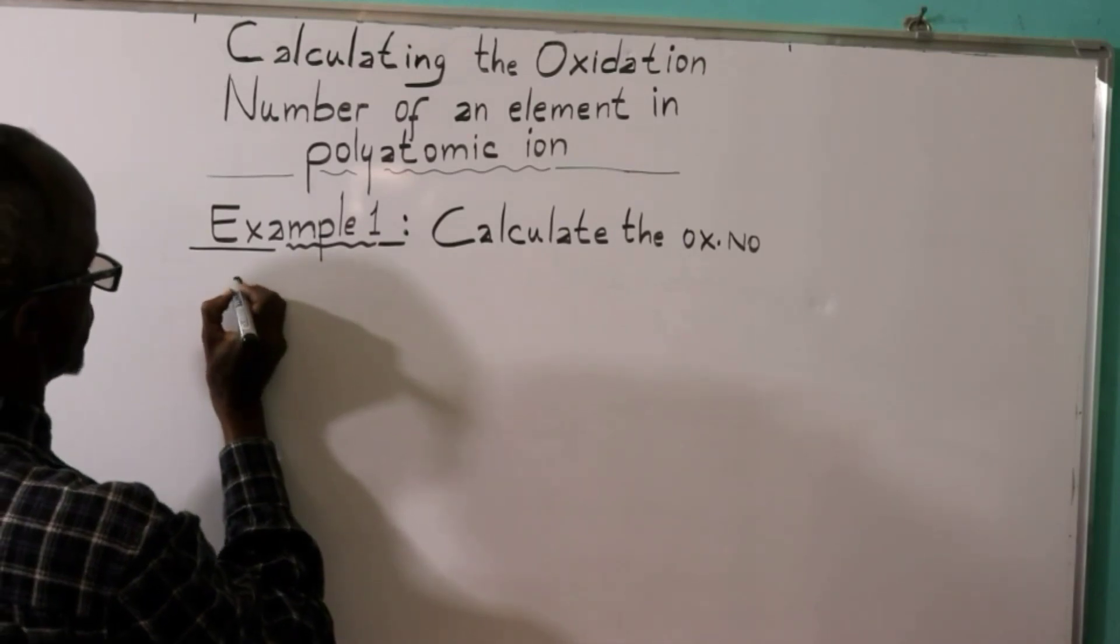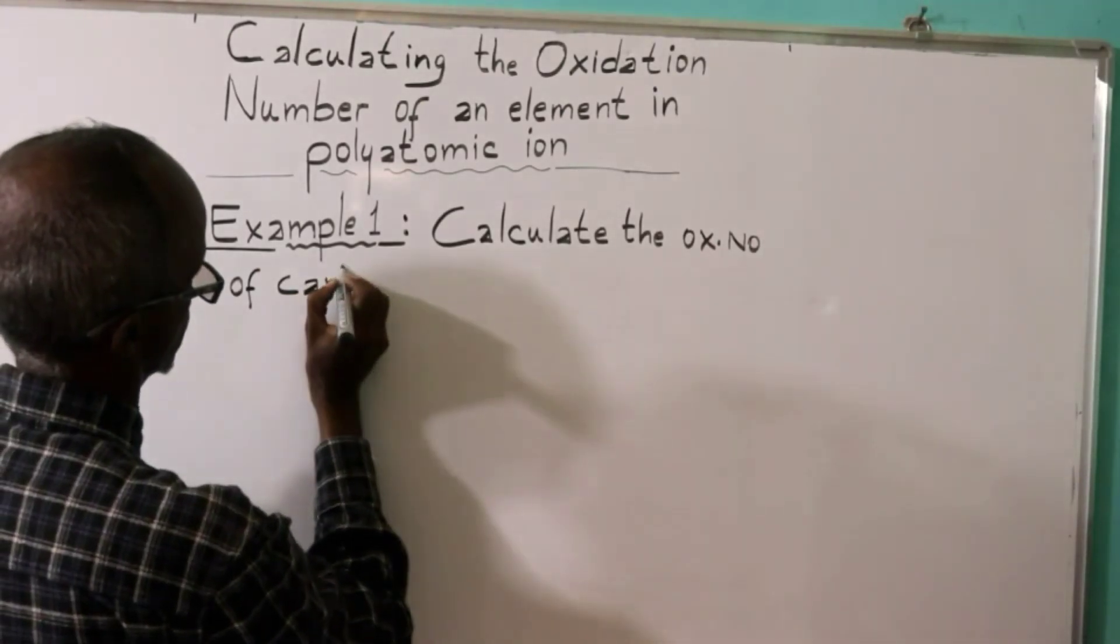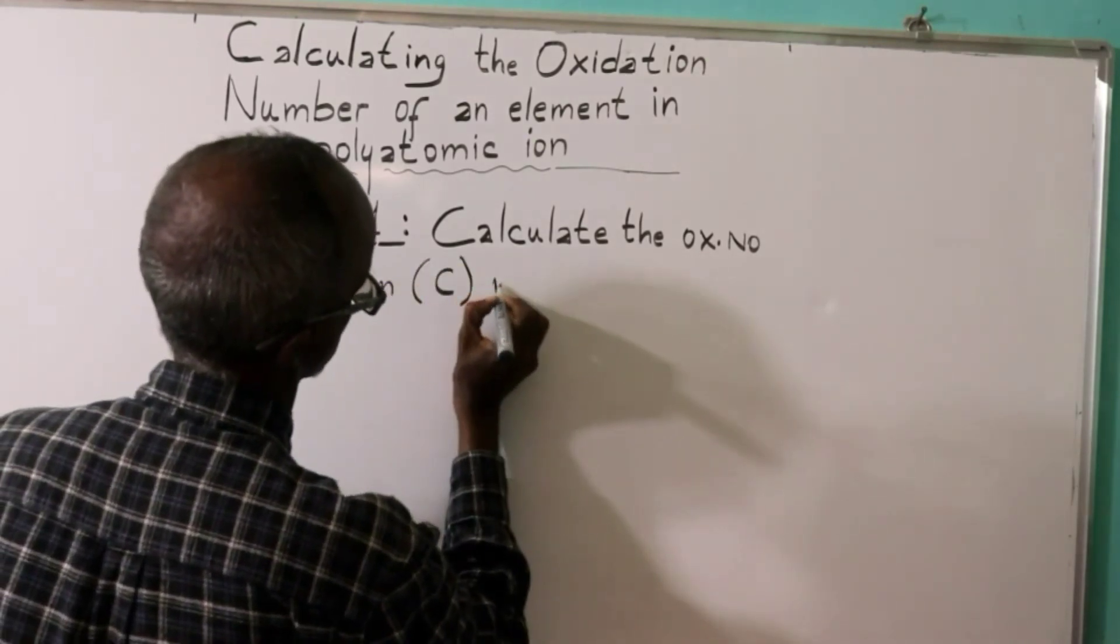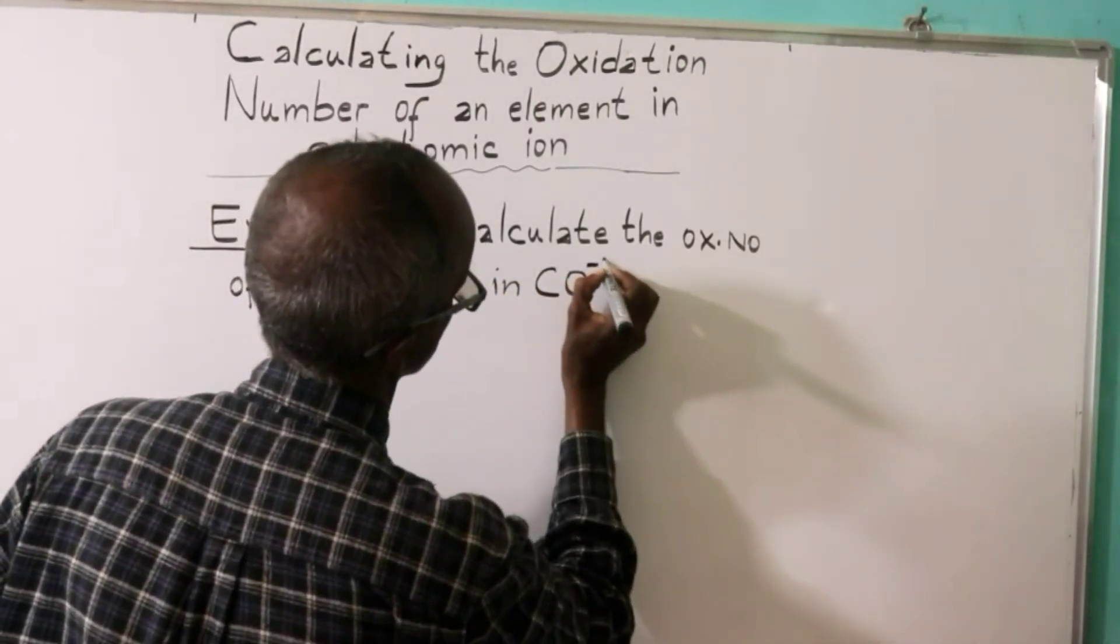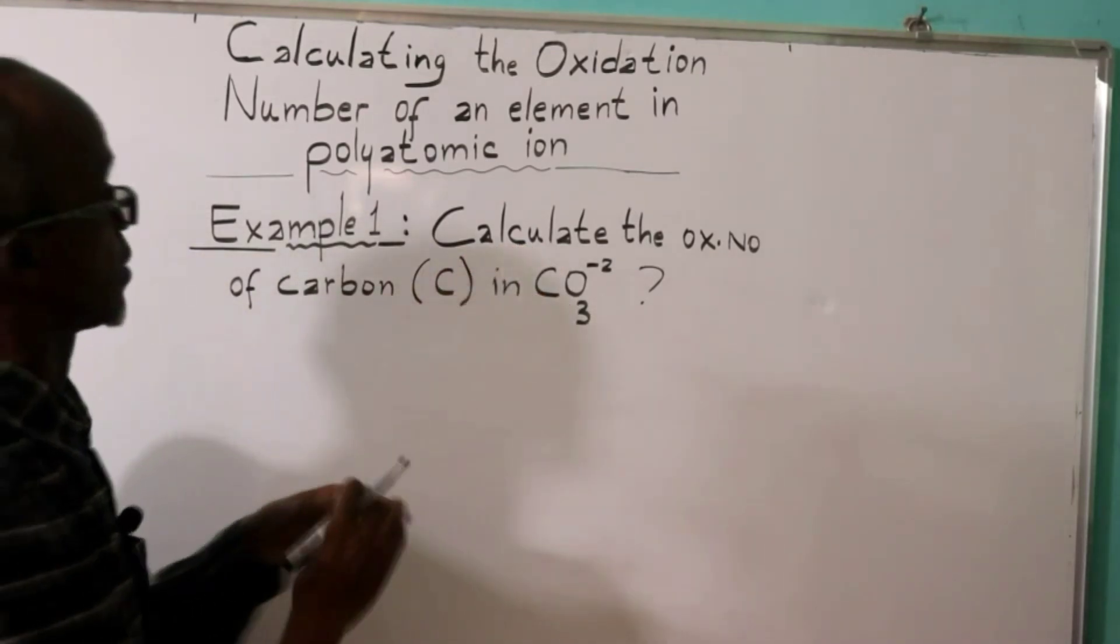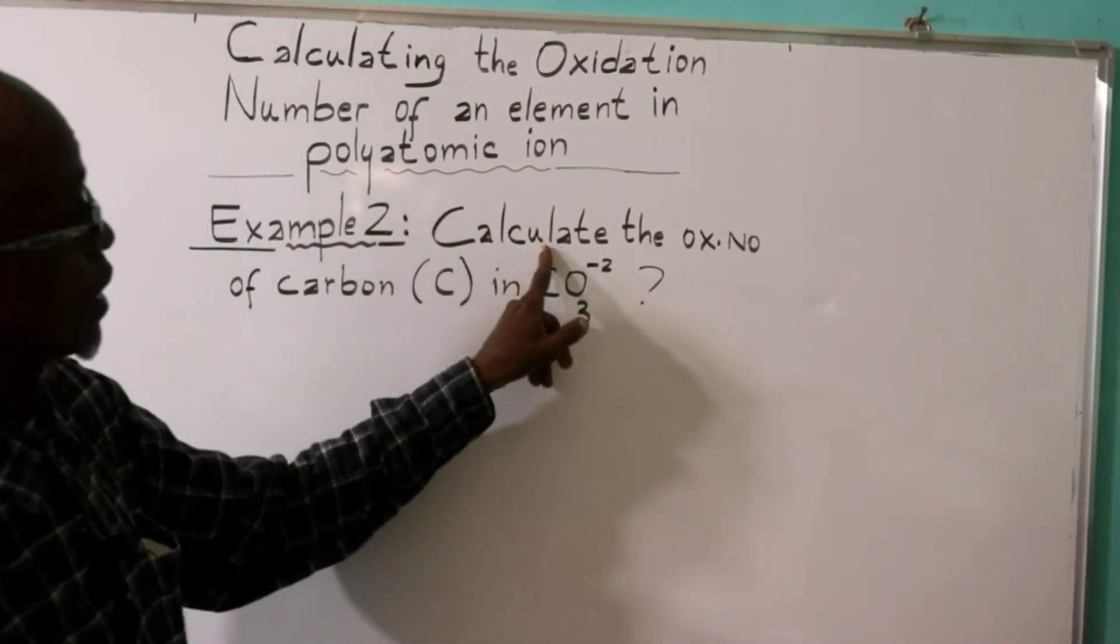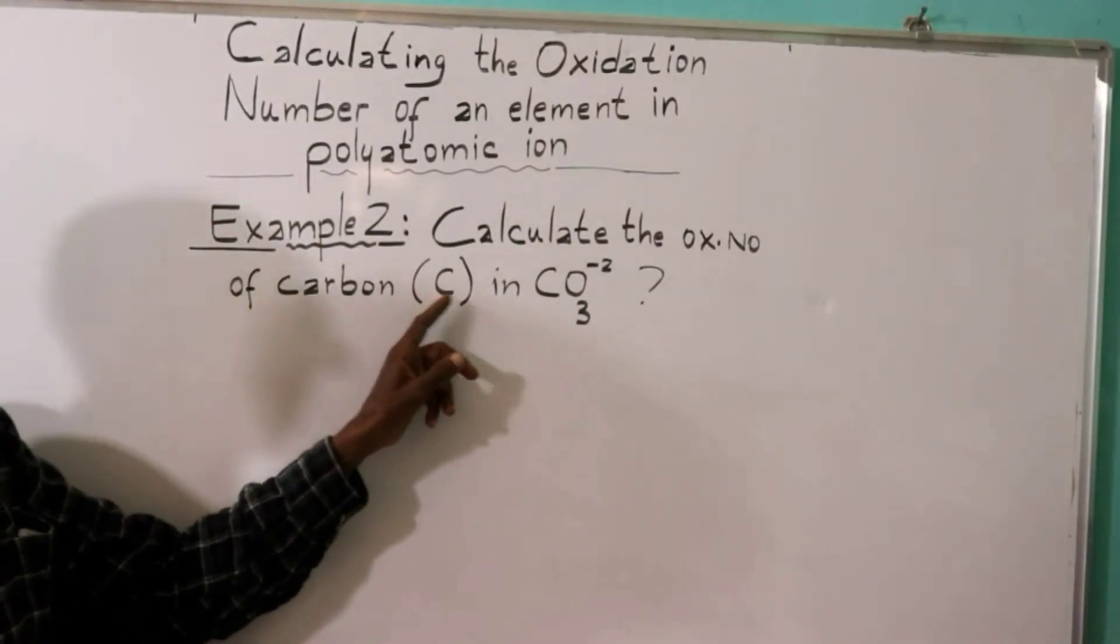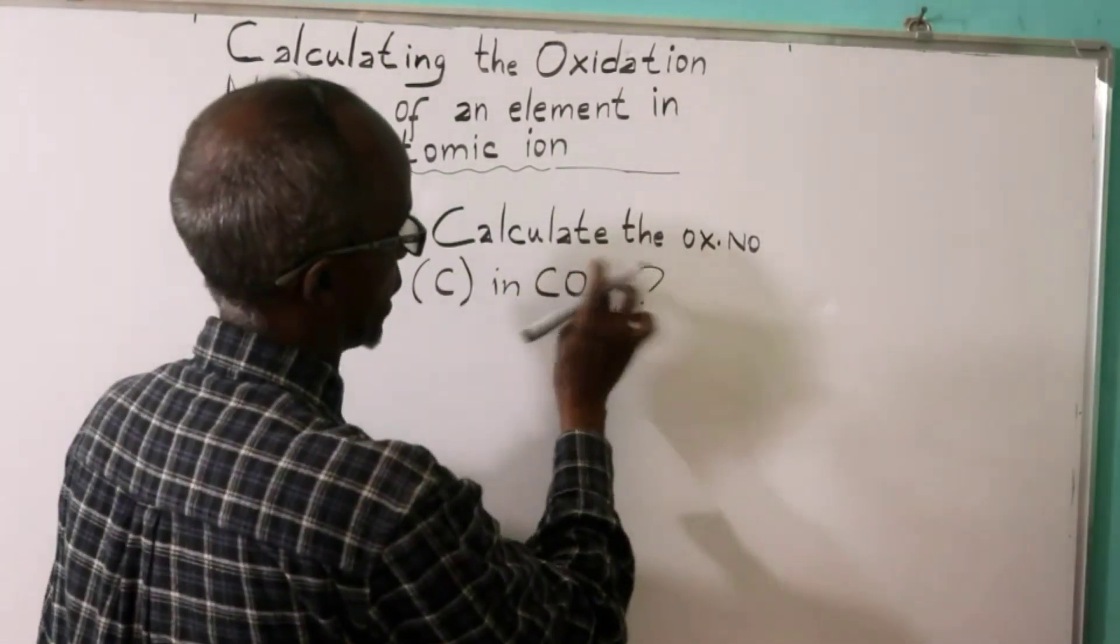Example 2: Calculate the oxidation number of carbon in carbonate ion CO₃²⁻.